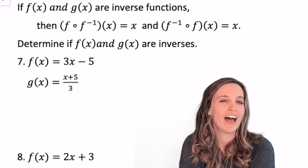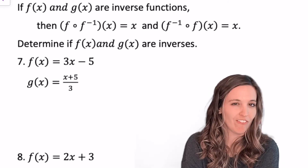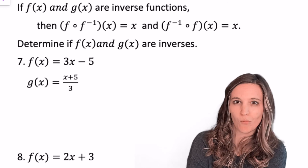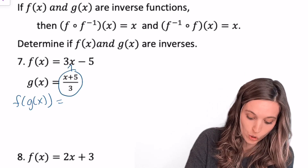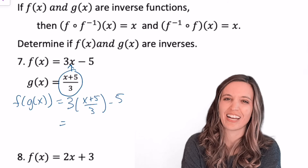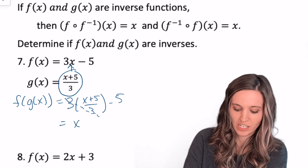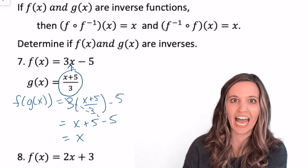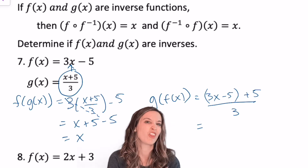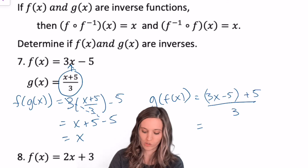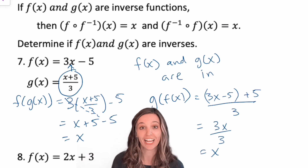In this next section we're asked if f of x and g of x are inverses of each other. A quick way to do that is compositions of functions. If we take f of g of x and we get x, and then we take g of f of x and we get x, they're inverses of each other. Let's do f of g of x — plug g of x into x. F of g of x is 3 times the quantity x plus 5 divided by 3, minus 5. Those threes divide out, leaving x plus 5 minus 5 — I get x. Now check g of f of x: g of f of x is 3x minus 5 plus 5 all divided by 3, which is 3x divided by 3 — I get x. So f and g are inverses of each other.